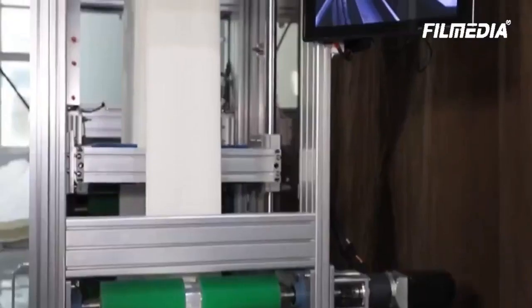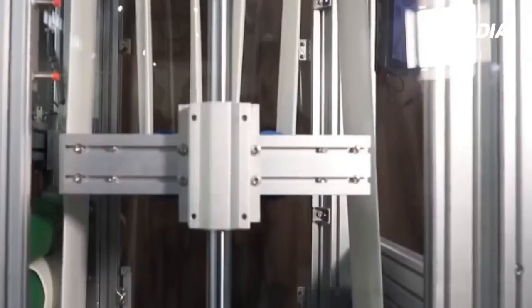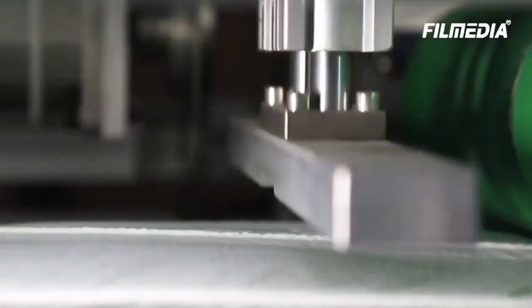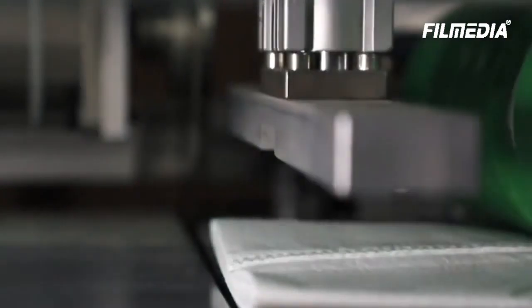This automatic sewing line can easily cut PTFE and fiberglass material because of its high power servo motor and alloy steel blade.